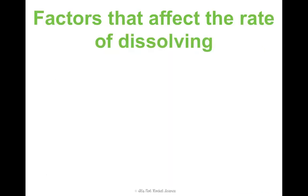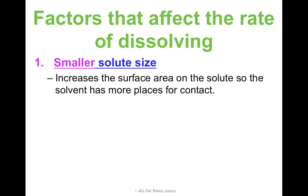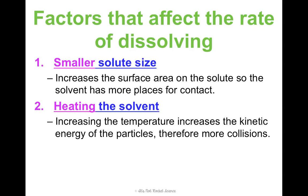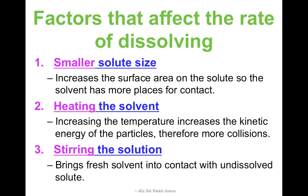The last thing I want to mention is factors that affect the rate of dissolving. There are three main ones. First, smaller solute size — the smaller the solute, the faster dissolving occurs because there's more surface area on each particle, giving the solvent more places to make contact. Second, heating the solvent increases the rate because higher temperature means more kinetic energy, so particles collide more and dissolve faster. Third, stirring the solution also increases the rate because it brings fresh solvent into contact with solute that hasn't dissolved yet, promoting the dissolving process.